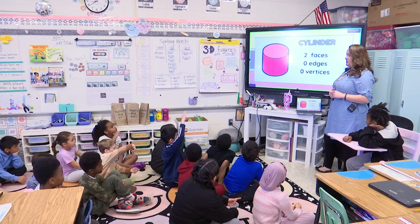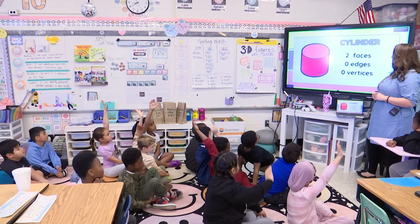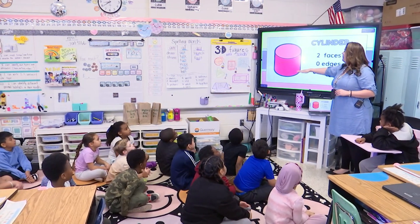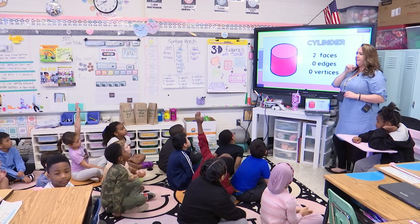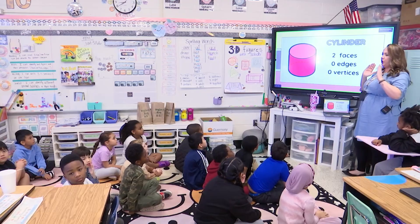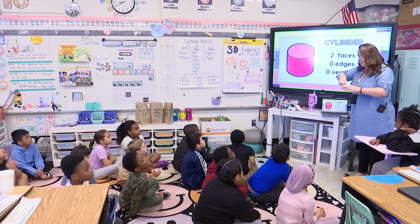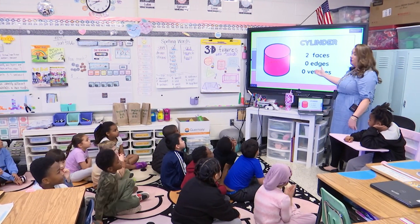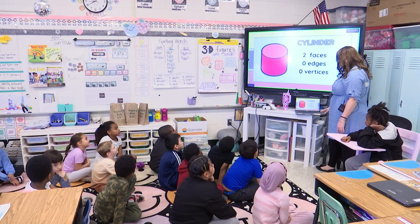What is this one called? Cylinder. You've got two faces on the top and bottom. What shape are those faces? Circle. Remember, when you look at it from the side it might look oval, but from the top it's a perfect circle. It's got zero edges and zero vertices because it's also round.